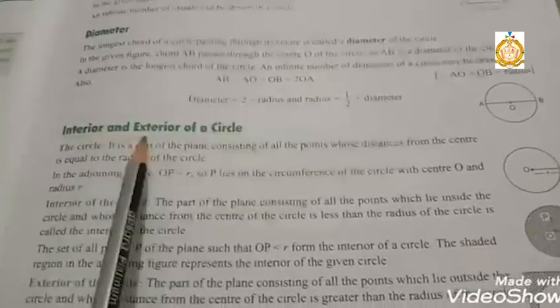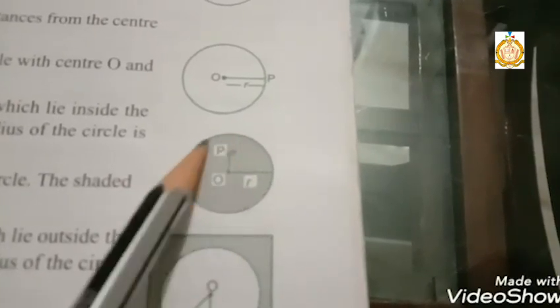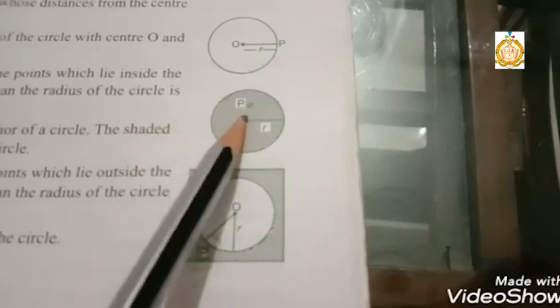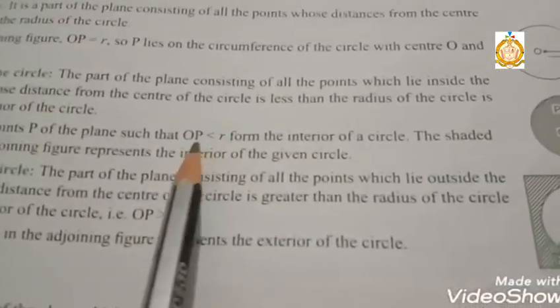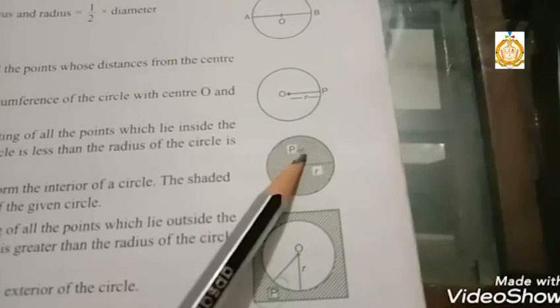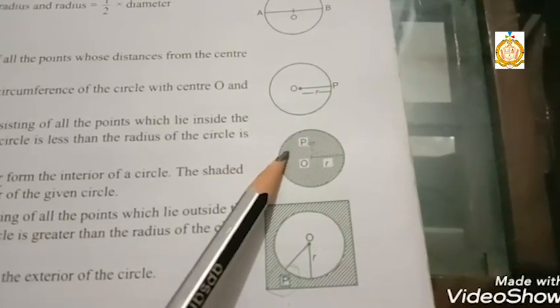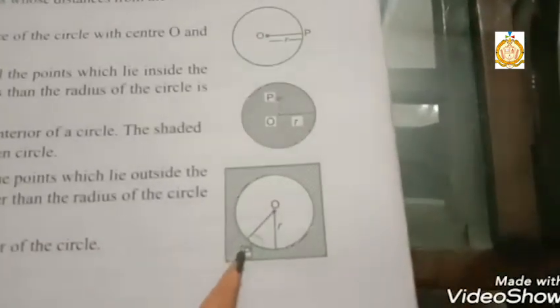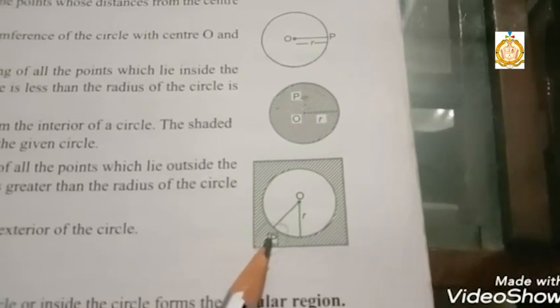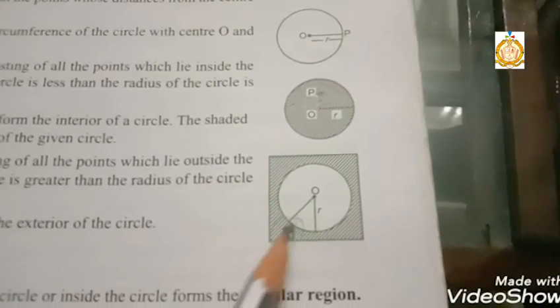Interior and exterior of the circle: interior means inside, exterior means outside. If point P is inside the circle, it is an interior point, so OP is less than r. If point P is outside the circle, it is an exterior point, so OP is greater than r. If a point lies inside the circle, its distance from center is always less than the radius; if outside, it is always greater than the radius.